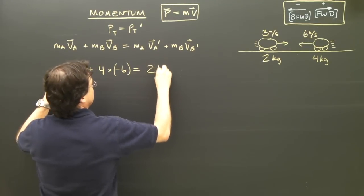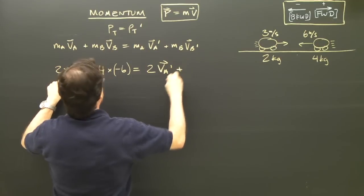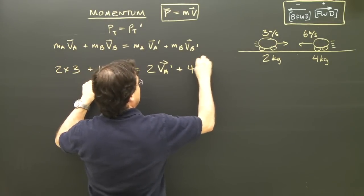Afterwards, I've got to account for the 2, and vA afterwards, plus B, which is 4 kilograms, and vB afterwards.